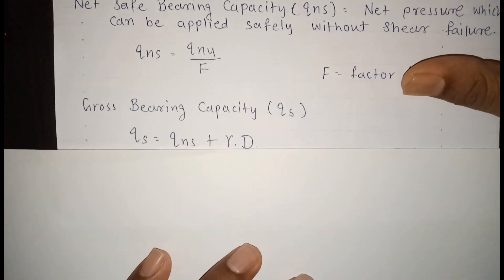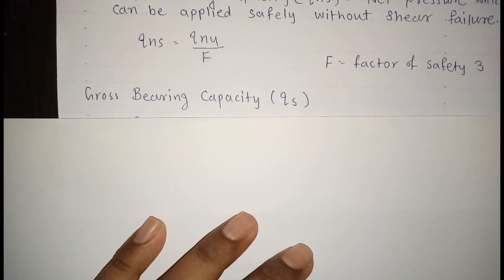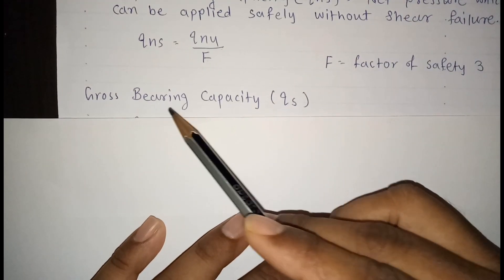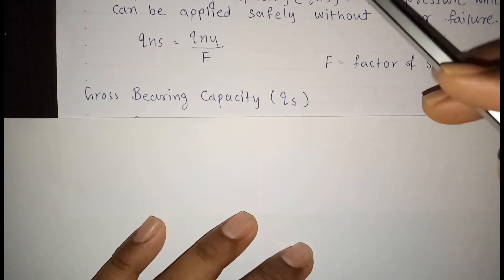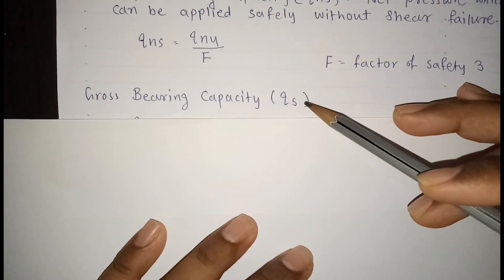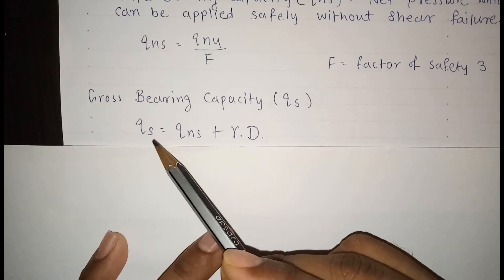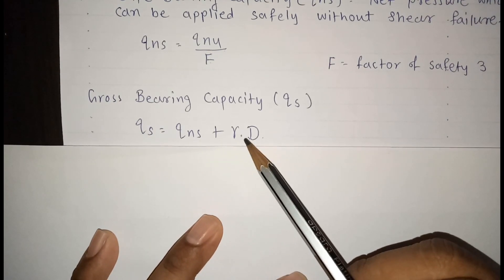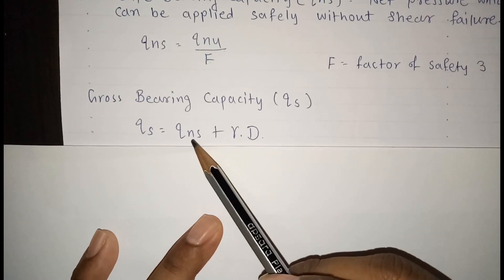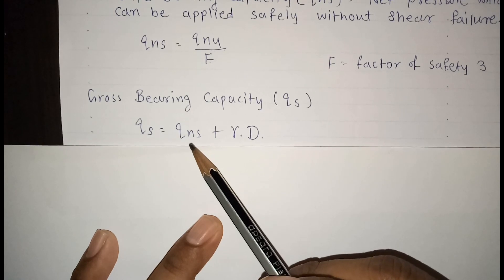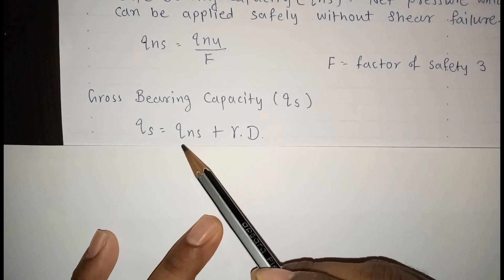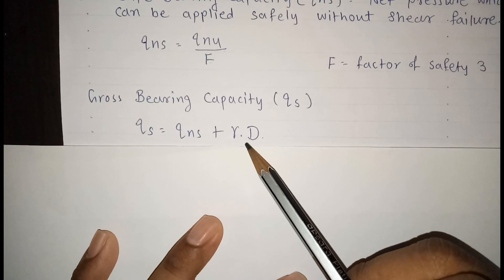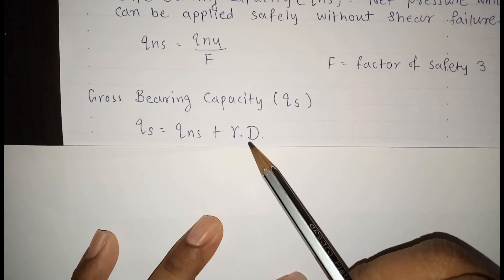Next is gross safe bearing capacity, denoted by QS. QS = QNs + γD, where QNs is the net safe bearing capacity and γD is the overburden pressure.